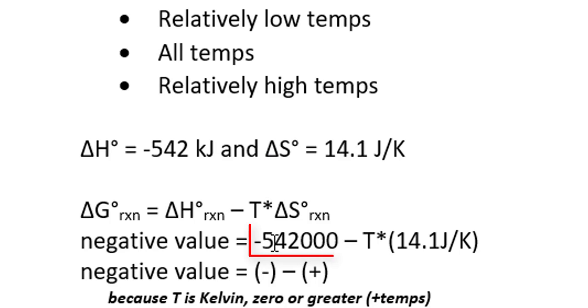Our delta H value is negative, so that contributes to a product favored scenario. Our delta S value is positive. That also contributes to a product favored scenario. The math agrees with this. Let's take a look.